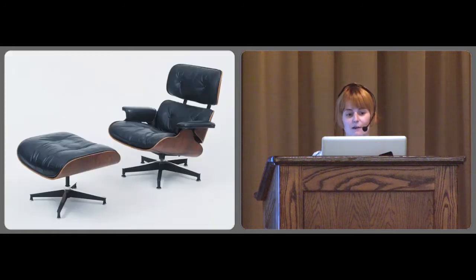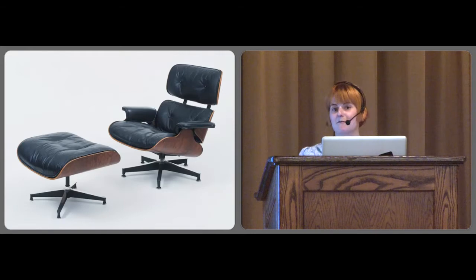So to start us off, this is the Eames Lounge Chair in Ottoman. It might be familiar, Frasier has one in his apartment. It was released in 1956 and it is part of the permanent collection at the Museum of Modern Art in New York. It was designed by Charles and Ray Eames, whose marriage and creative partnership has been described as a modernist fairy tale of true partnership.